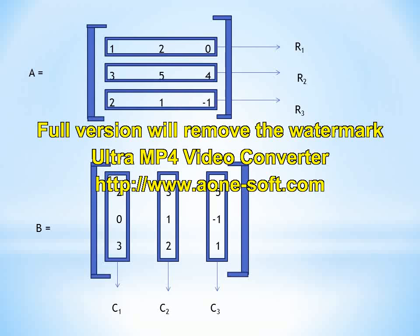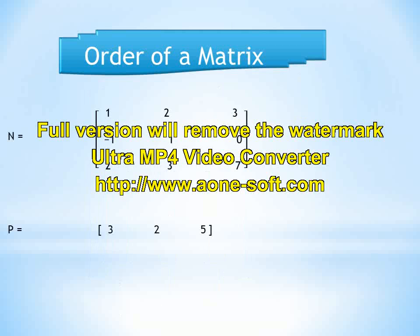Here we will find the order of a matrix. To find the order of any matrix, we must know the number of rows and columns. In matrix N, there are 3 rows and 3 columns, so the order of matrix N is 3 by 3. In the second example, there is only 1 row and 3 columns, so the order of matrix P is 1 by 3.